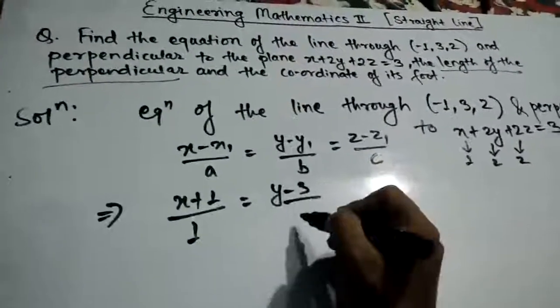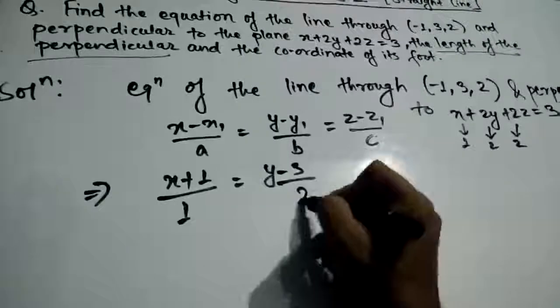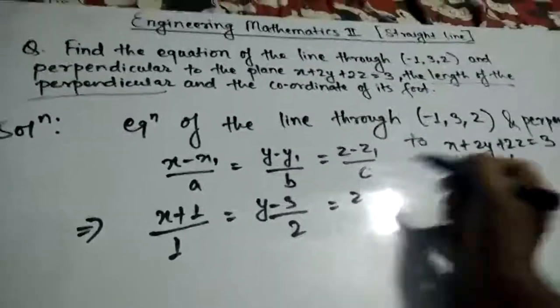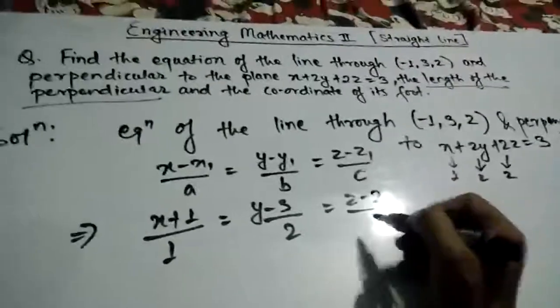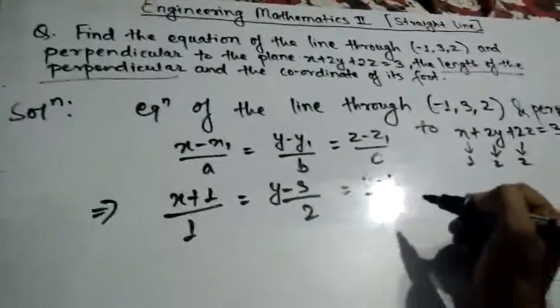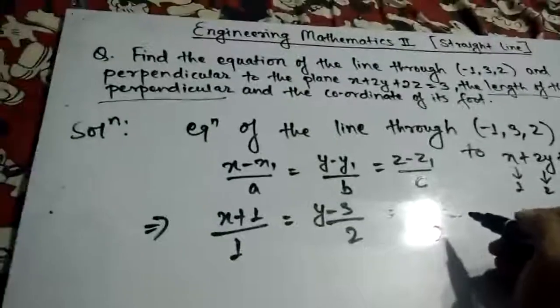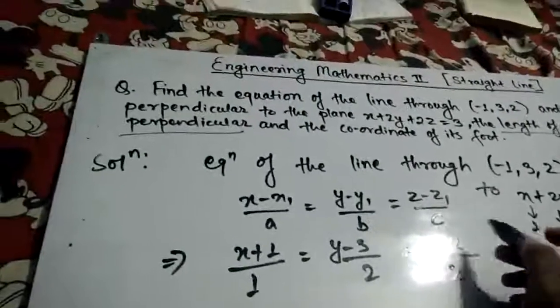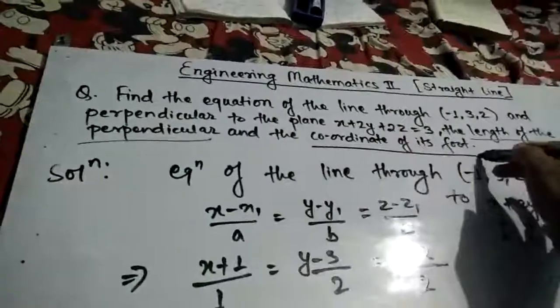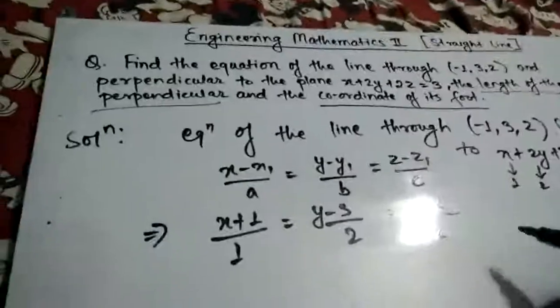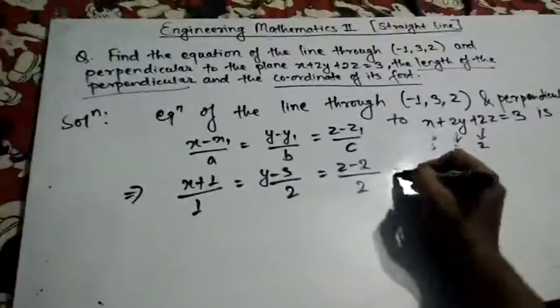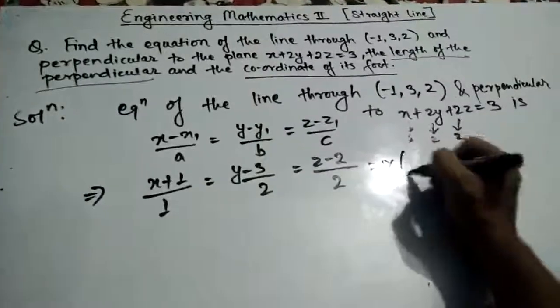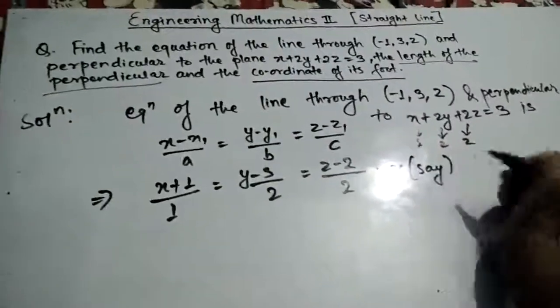So the equation becomes: (x - (-1))/1 = (y - 3)/2 = (z - 2)/2, which is (x + 1)/1 = (y - 3)/2 = (z - 2)/2. Now since we have to find the coordinates of the foot and the length, we suppose this common ratio equals r.